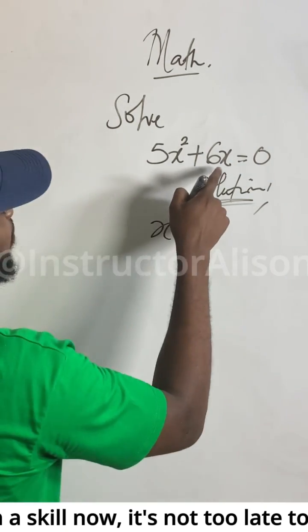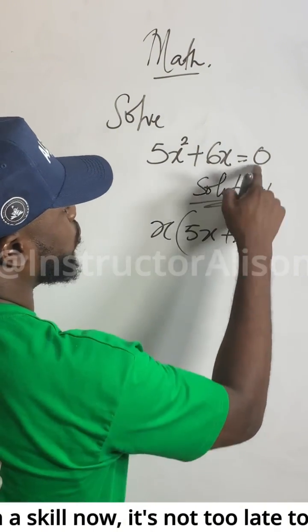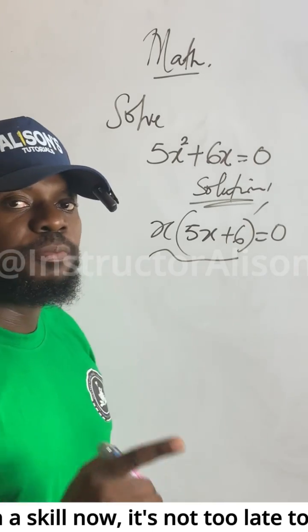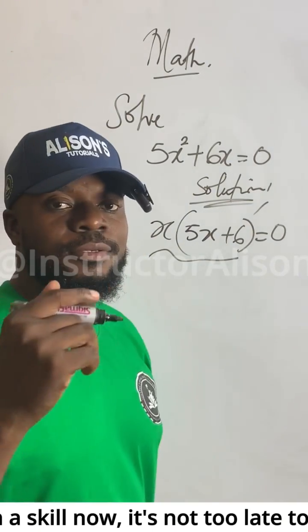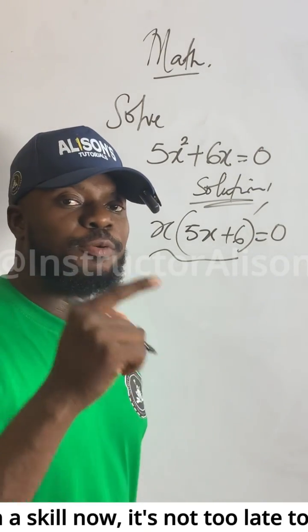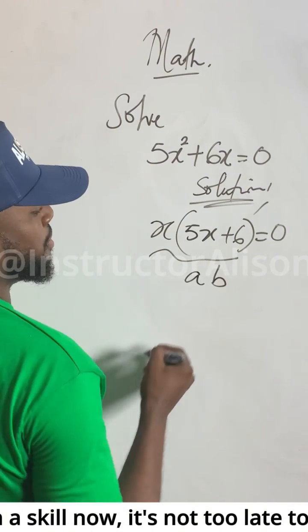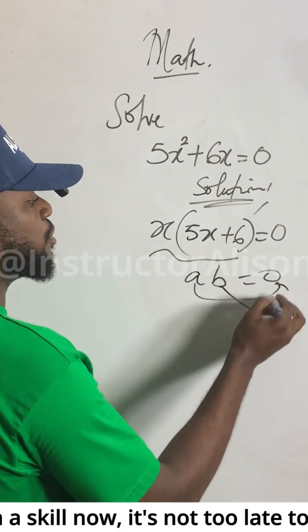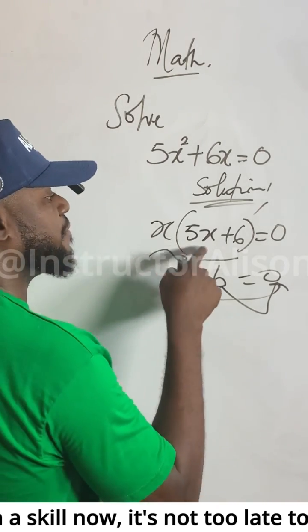This is what we call the Zero Product Property. The Zero Product Property says: if I get a times b equal to zero, it is either a will be equal to zero or b will be equal to zero. So if I get x times (5x plus 6) equal to zero...